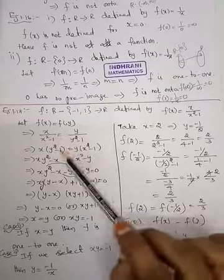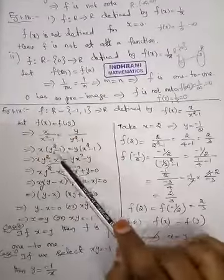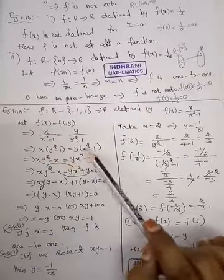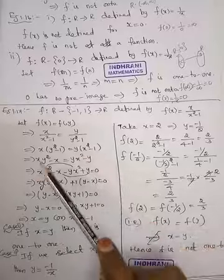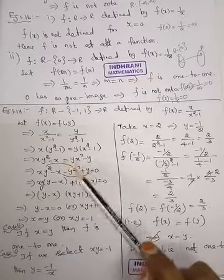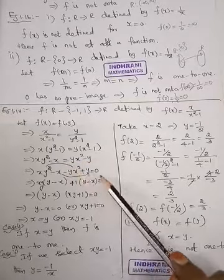Then x into y squared minus 1 equals y into x squared minus 1. So bringing x inside: xy squared minus x equals yx squared minus y. So xy squared minus x, bring it to the left hand side: minus yx squared plus y equals 0.